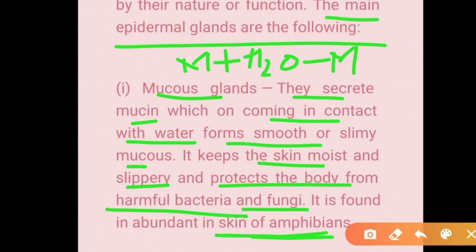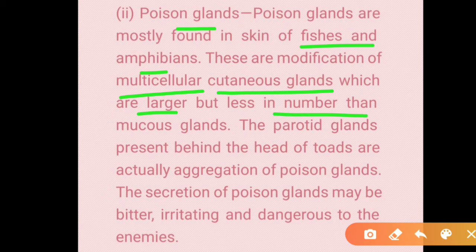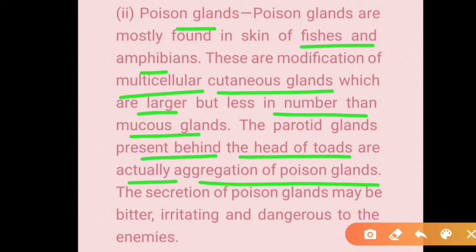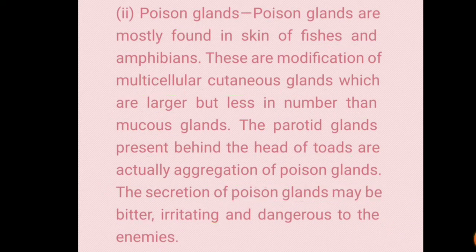Mucous glands are found in the skin of amphibians and fishes. The next type is poison glands, found in the skin of fishes and amphibians. These are multicellular cutaneous glands but fewer in number than mucous glands. The parotid glands, present behind the head of toads, are actually aggregations of poison glands. Their secretion may be bitter, irritating, and dangerous to enemies.